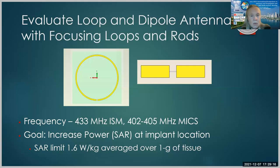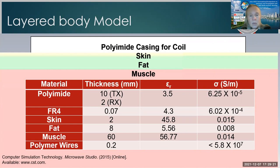So here's an example of a model for the coils. We could use a polyimide casing for the coil to keep it from short circuiting against the body, and we could have skin, fat and muscle, and here are the properties shown here. In this case, we're going to model the polymer wires having the same conductivity as copper, although we have found that any conductivity of 10 to the fifth and up is going to act very similar.